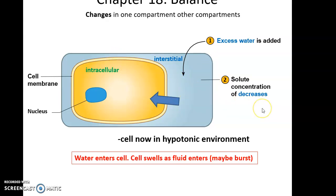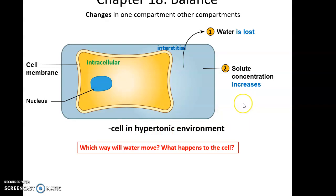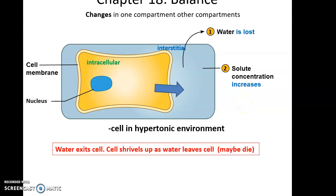In a hypotonic environment, high water concentration outside and low water concentration inside means water moves into the cell. We can also have water loss - less water in the interstitial compartment means a higher concentration of solute relative to water. This makes the interstitial fluid hypertonic compared to the cell, so water will move out of the cell, causing it to shrivel, shrink, and potentially die.